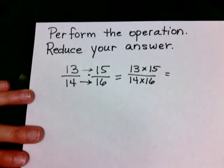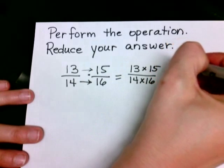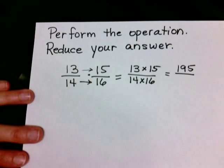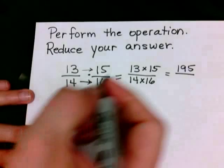So if we do 13 times 15, we're going to get 195. And then on the bottom, if we multiply 14 times 16, we're going to get 224.